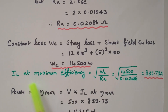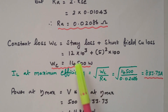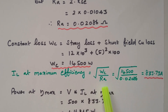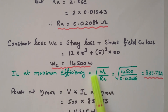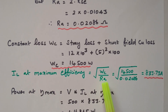The load current at maximum efficiency is given by the formula: IL = √(WC / Ra), where WC is the constant loss. Maximum efficiency occurs when constant loss equals variable loss. Substituting: IL = √(14,500 / 0.02086) = 833.73 ampere.